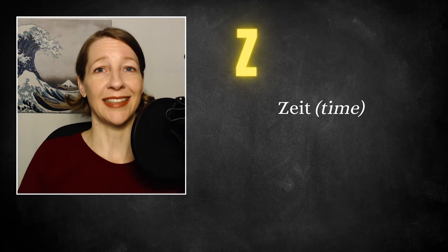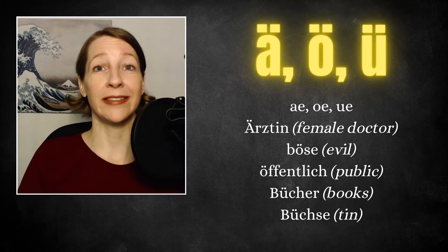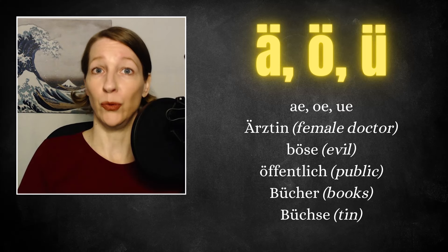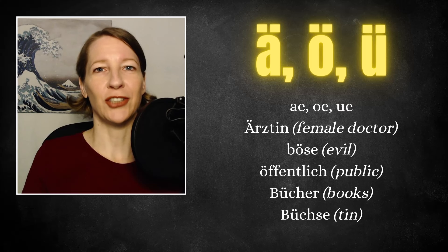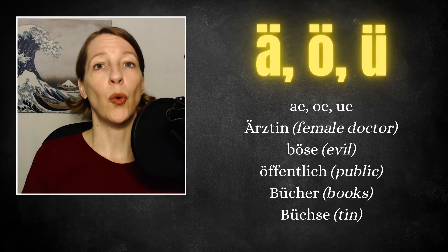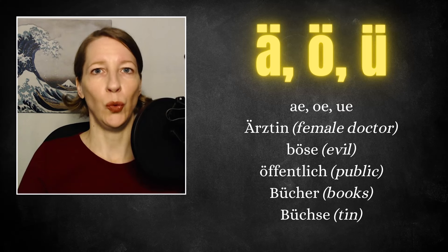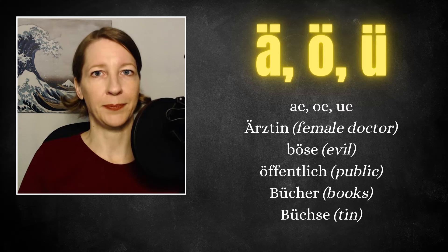But we still have four more. And three are Umlaute, which is Ä, Ö and Ü. If you want to write them on your computer and you don't have the German keyboard or the German settings, you can just spell it. AE for Ä. OE for Ö. And UE for Ü.